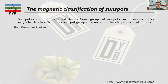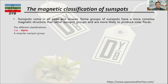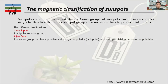There are classifications of sunspots based on their magnetic field. Sunspots come in all sizes and shapes, and some groups have more complex magnetic structure and are more likely to produce solar flares. The first classification is called Alpha, which belongs to a unipolar sunspot group.